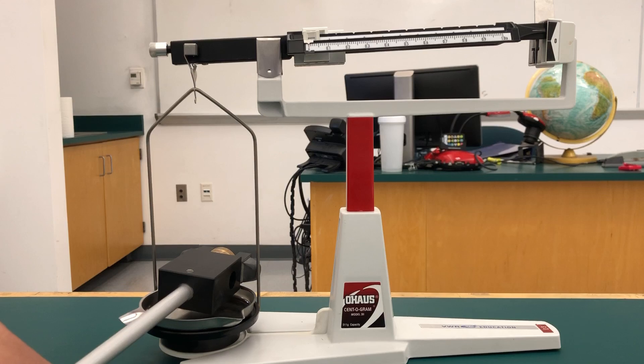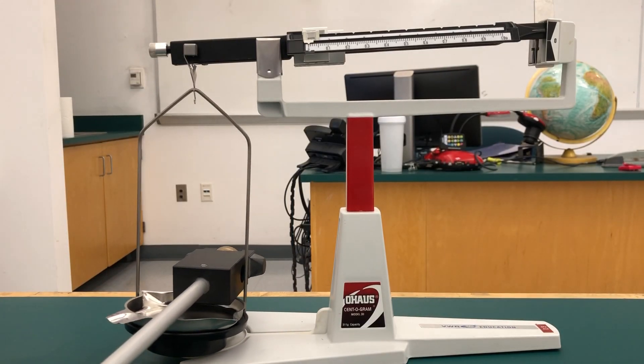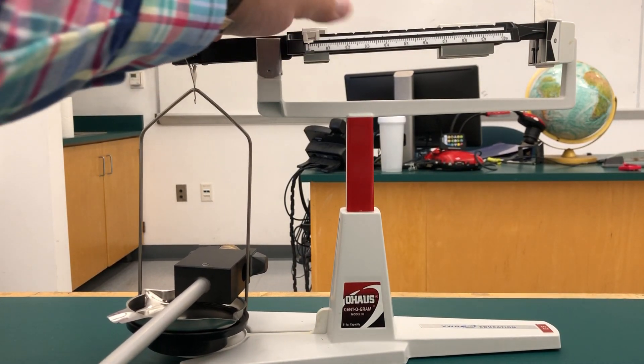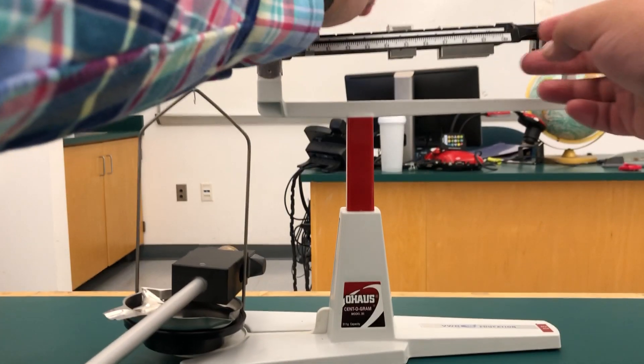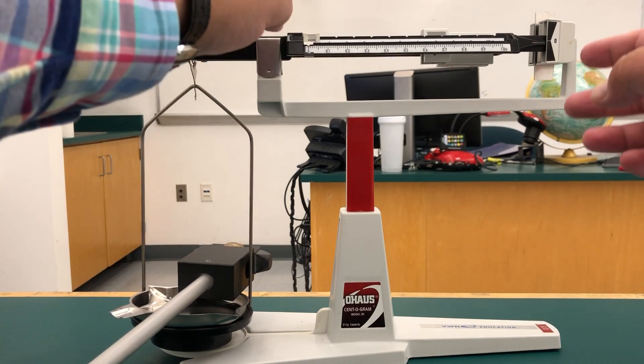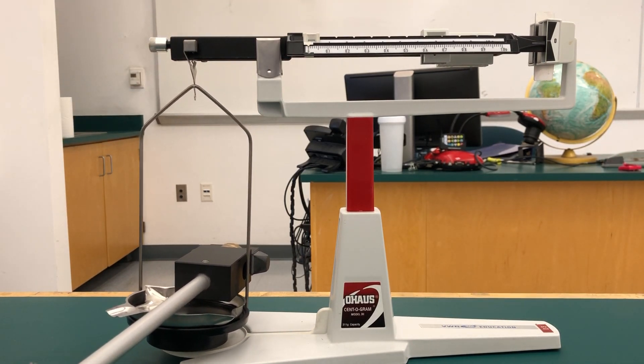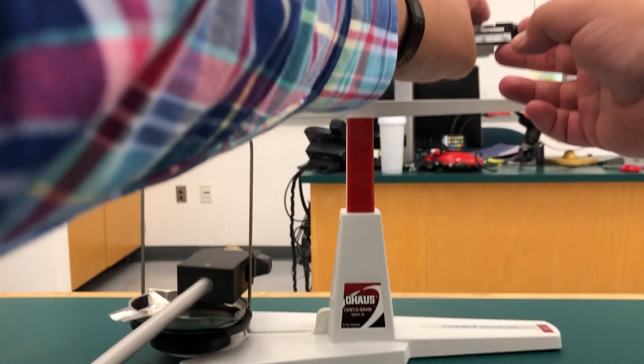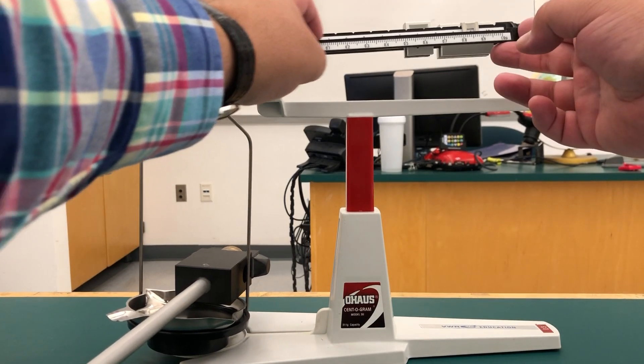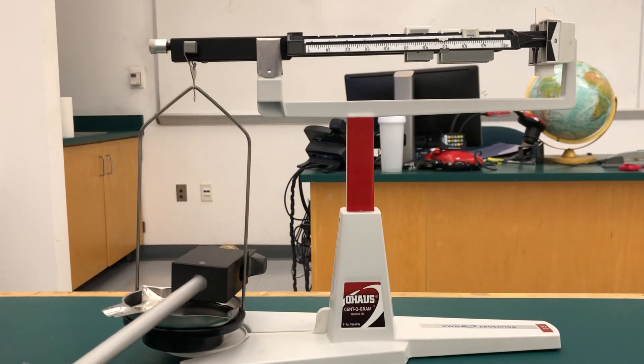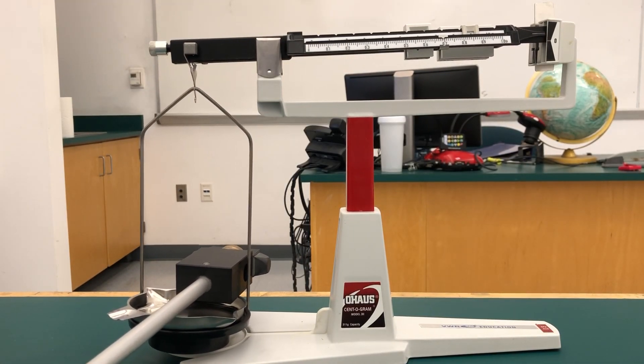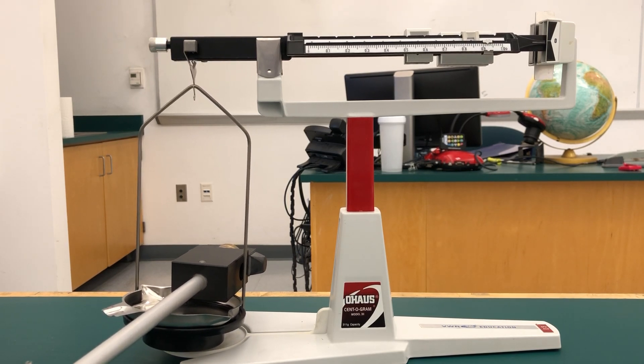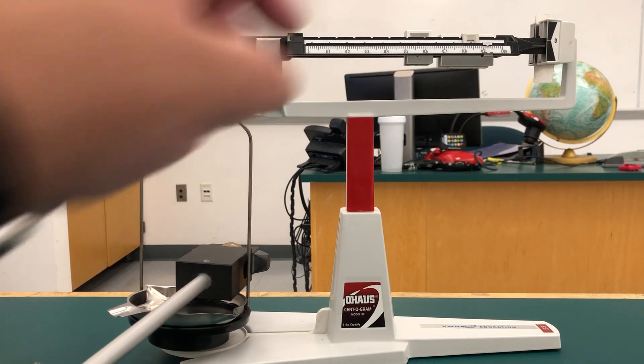So put the receiving cup on the scale. It's heavy, so 200 grams already. Okay, just a little less. Some more.